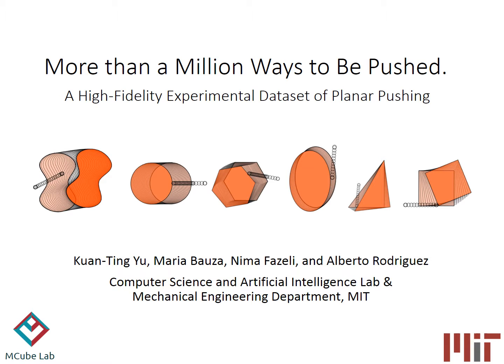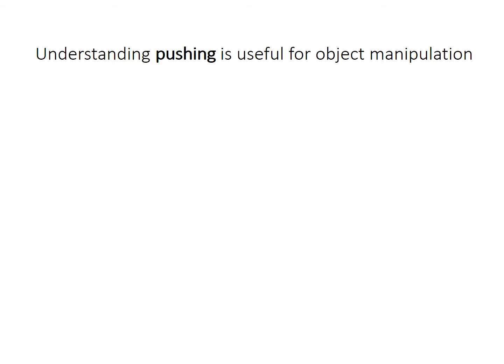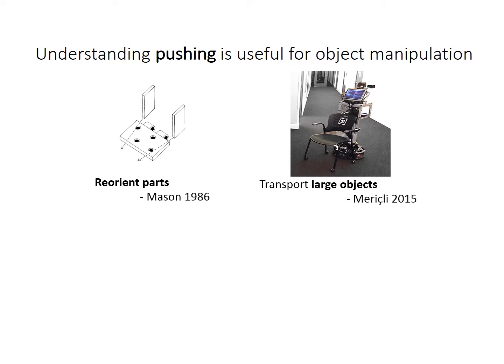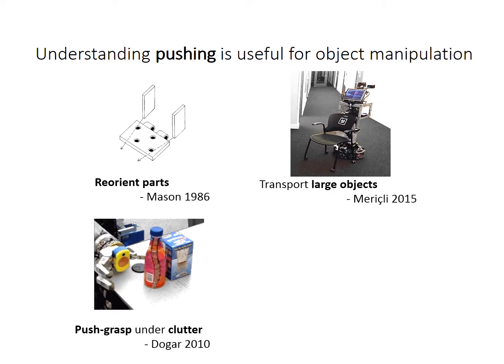This video presents a large, high-fidelity experimental pushing dataset collected at MIT MQBLAB. Understanding pushing mechanics is useful for robotic object manipulation, for example reorient parts, transport large objects, push grasp under clutter, or track object pose during manipulation.